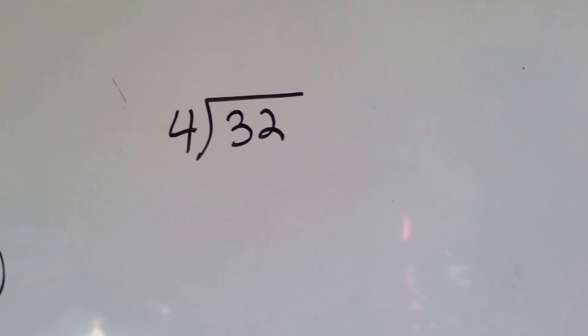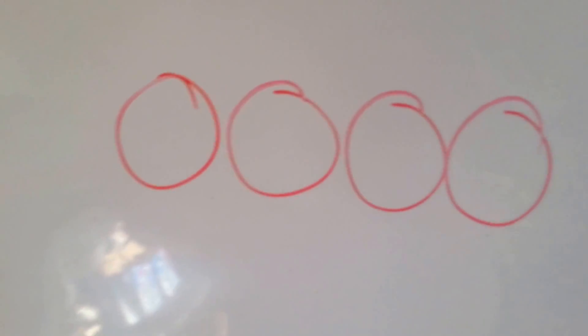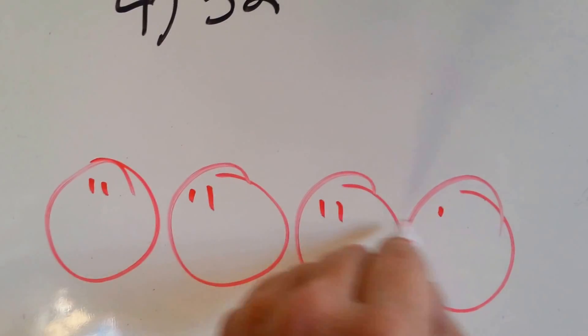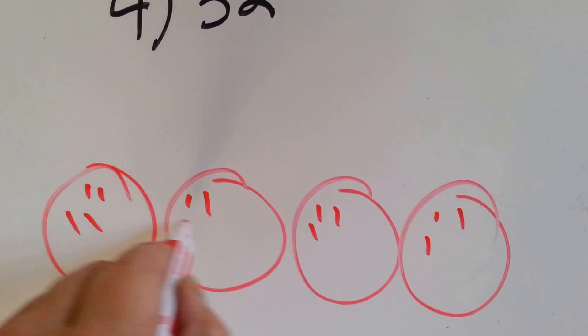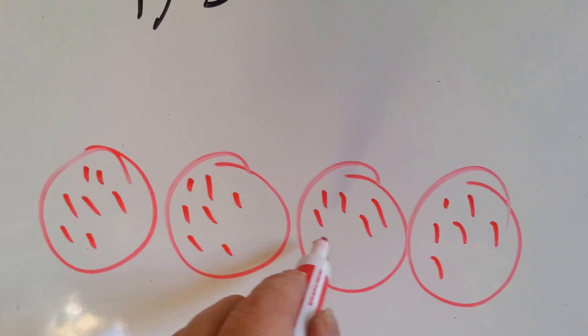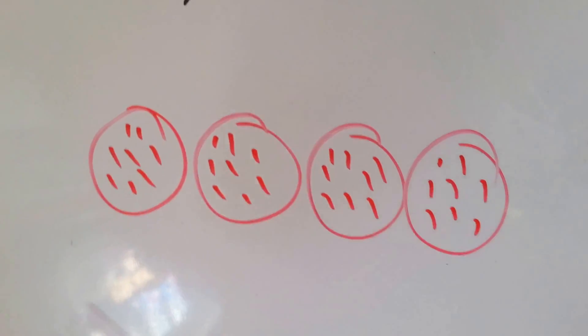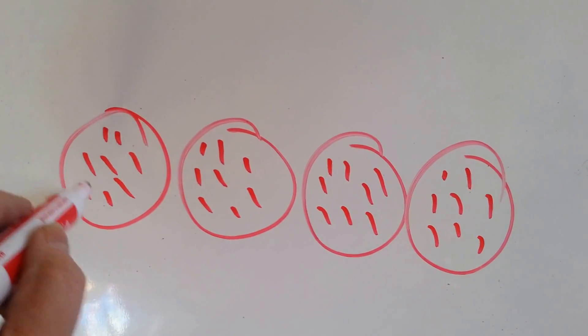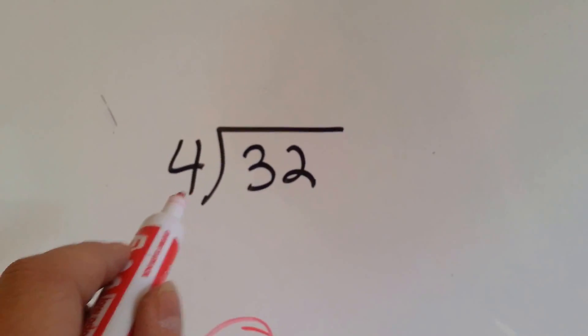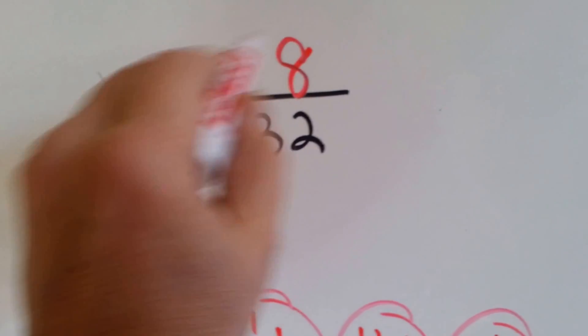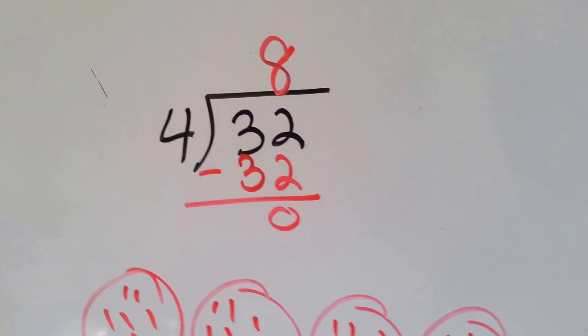4 goes into 32 how many times? Well, let's make our 4 groups. 1, 2, 3, 4. Now let's count up to 32 taking turns going in each group. 1, 2, 3, 4, 5, 6, 7, 8, 9, 10, 11, 12, 13, 14, 15, 16, 17, 18, 19, 20, 21, 22, 23, 24, 25, 26, 27, 28, 29, 30, 31, 32. There. We split the 32 evenly into 4 groups. And now all we need to do is count how many are in the group. 1, 2, 3, 4, 5, 6, 7, 8. There's 8 in each group. So 4 goes into 32 8 times. And remember, we didn't put 4 into 3, we put 4 into 32, so the 8 goes above the 2. We do our multiplication. 4 times 8 is 32. Do our subtraction and get 0. And we're finished with our long division problem.